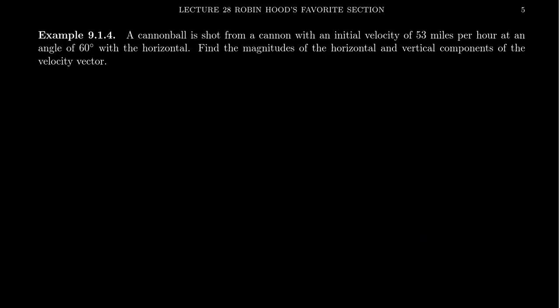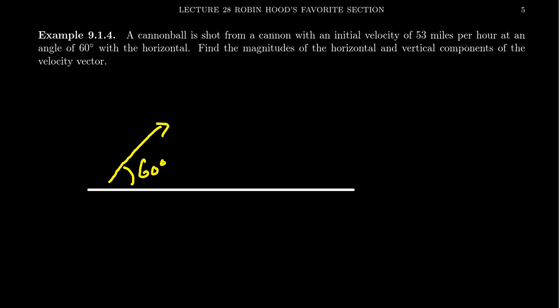Imagine that a cannonball is shot from a cannon with an initial velocity of 53 miles per hour at an angle of 60 degrees with the horizontal. We have the ground, and we've launched a cannonball that follows a path. We're going to look at the initial vector at the start — this initial velocity vector V — which has a direction of 60 degrees, shot above the ground, starting at 53 miles per hour. Can we find the magnitudes of the horizontal and vertical components?